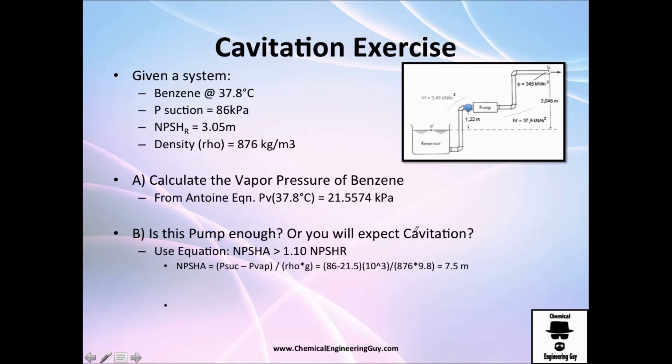Once we have the vapor pressure, recall that we only need to calculate the net positive suction head available and compare it versus the net specific head required. By definition, NPSH available is the pressure in the suction line, which we do have, thank God, minus the vapor pressure, which we already calculated. And because I want this in meters, I need to divide by the density and gravity.